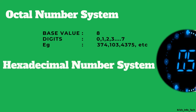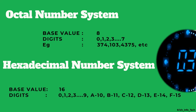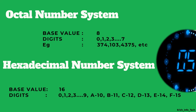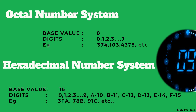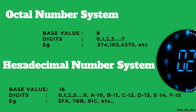Next, we have hexadecimal. The base is 16. Counting from 0 to 9, when we reach 10 we go to alphabets for the next 6 digits: A equals 10, B equals 11, C equals 12, D equals 13, E equals 14, F equals 15 — reaching 16. A hexadecimal number looks like 3FA, where 3 is a number, F represents 15, and A represents 10.